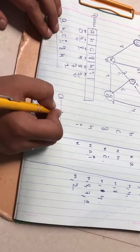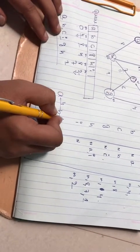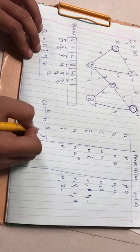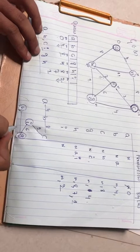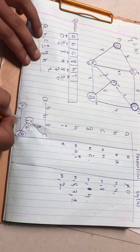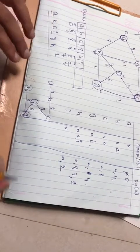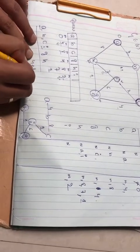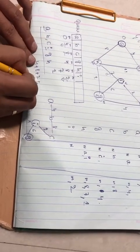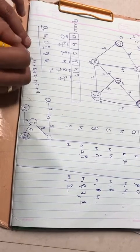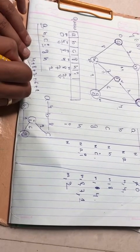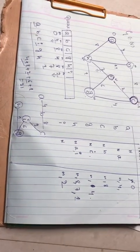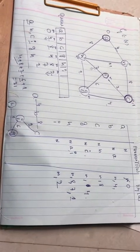The edges are: a to b is 4, b to c is 8, c to i is 2, i to g is 6, g to h is 1. This is my minimum cost spanning tree. The total value will be 4 plus 8 plus 2 plus 6 plus 1: 4 plus 8 is 12, plus 2 is 14, plus 6 is 20, plus 1 is 21. So 21 will be the minimum cost of the spanning tree.